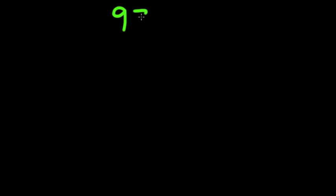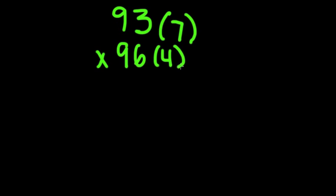Let's take 93, which is 7 away from 100, so we're going to put a little 7 next to the 93, multiplied by 96, which is 4 away from 100, so we'll put a 4 next to the 96. You take the top number, 93, and you subtract the second number in parentheses. 93 minus 4 is 89. That is the first half of your answer.